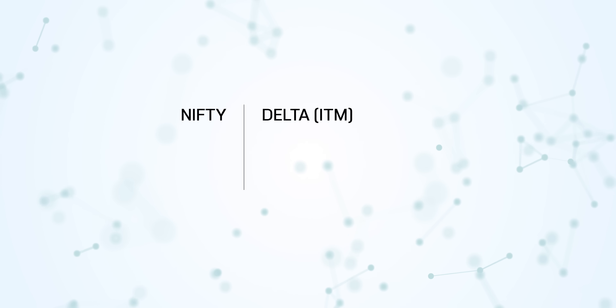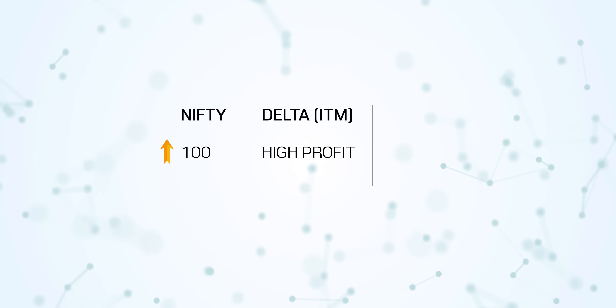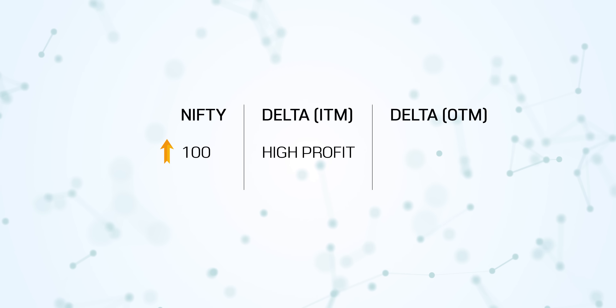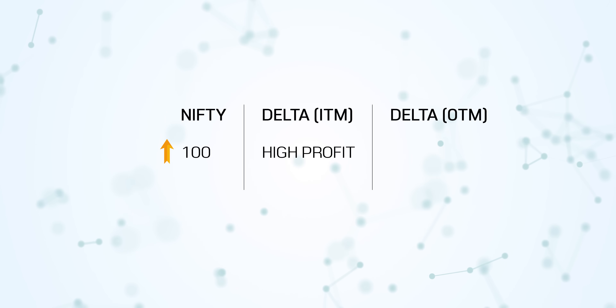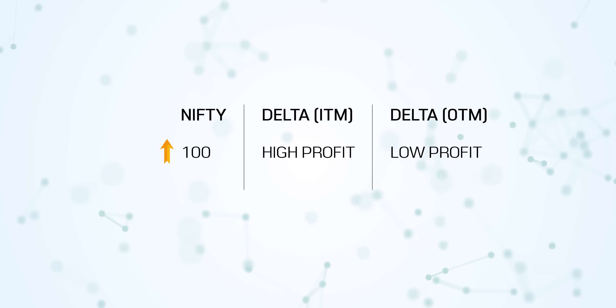In summary: if you buy an in the money option, when the market goes up, your profitability is going to be more. When you buy far out of the money options, because the delta is very low, your absolute profitability is also going to be low. Of course, when you buy far out of the money options, you pay very little money, so in percentage terms what you may get could be more — but we are talking only about absolute price change.